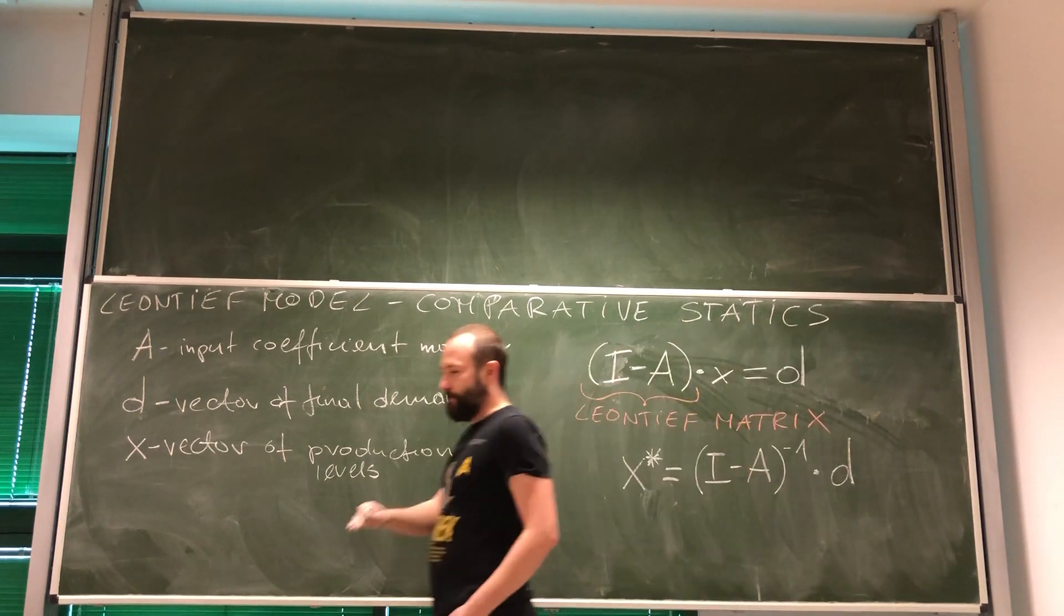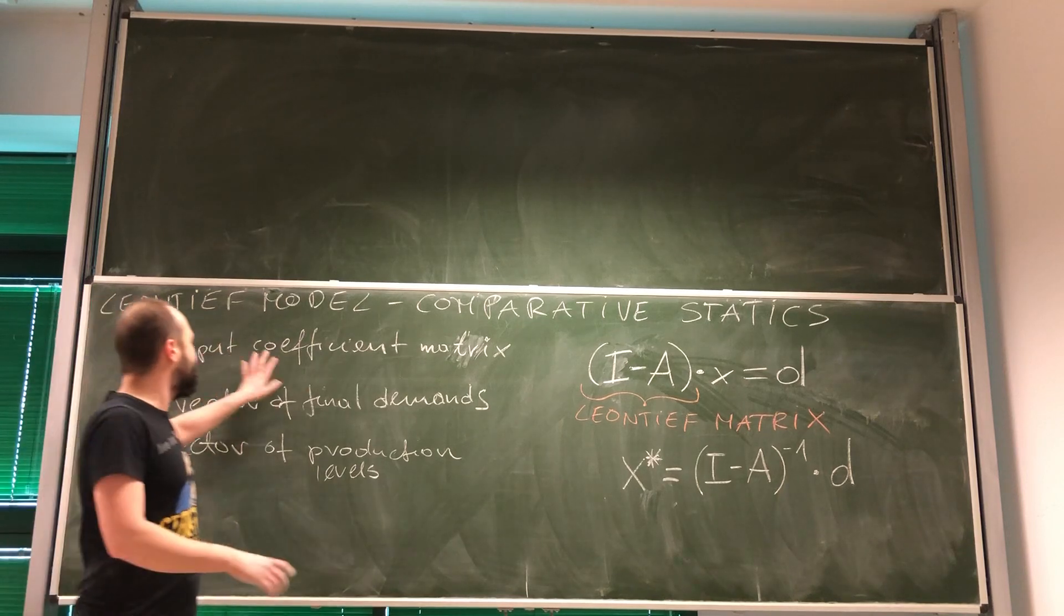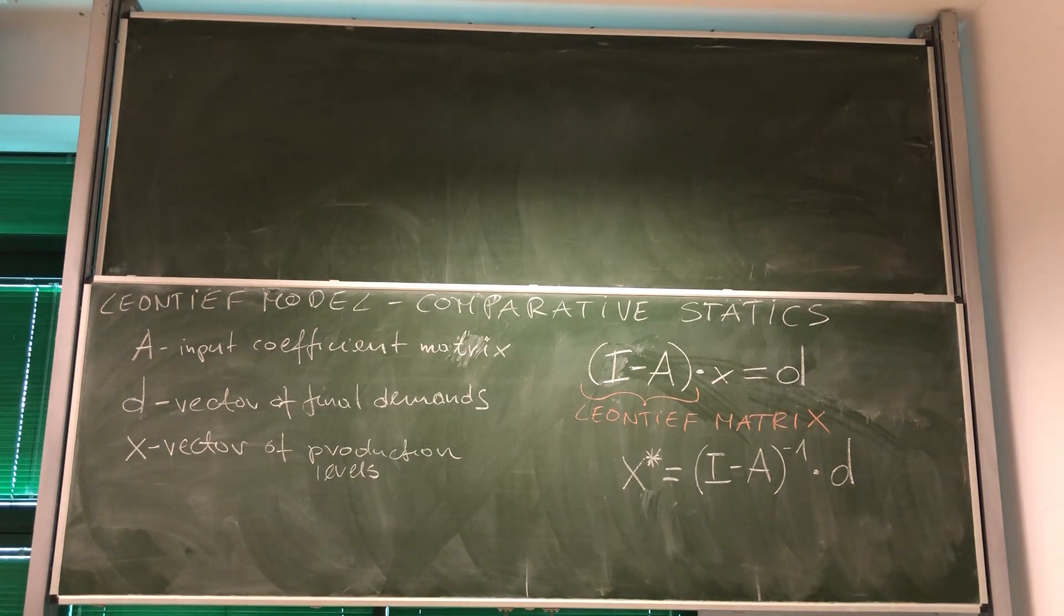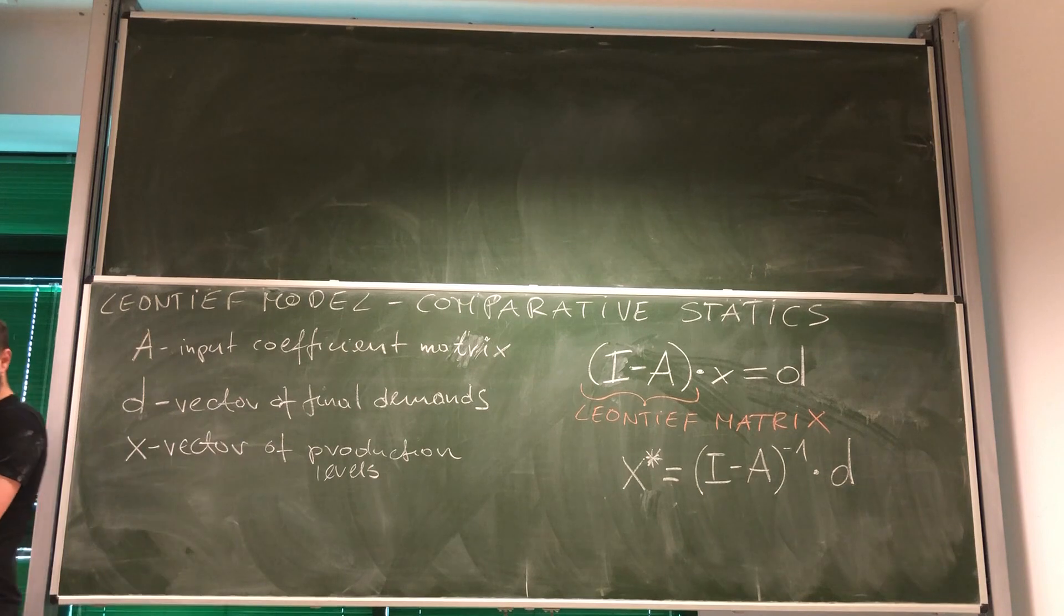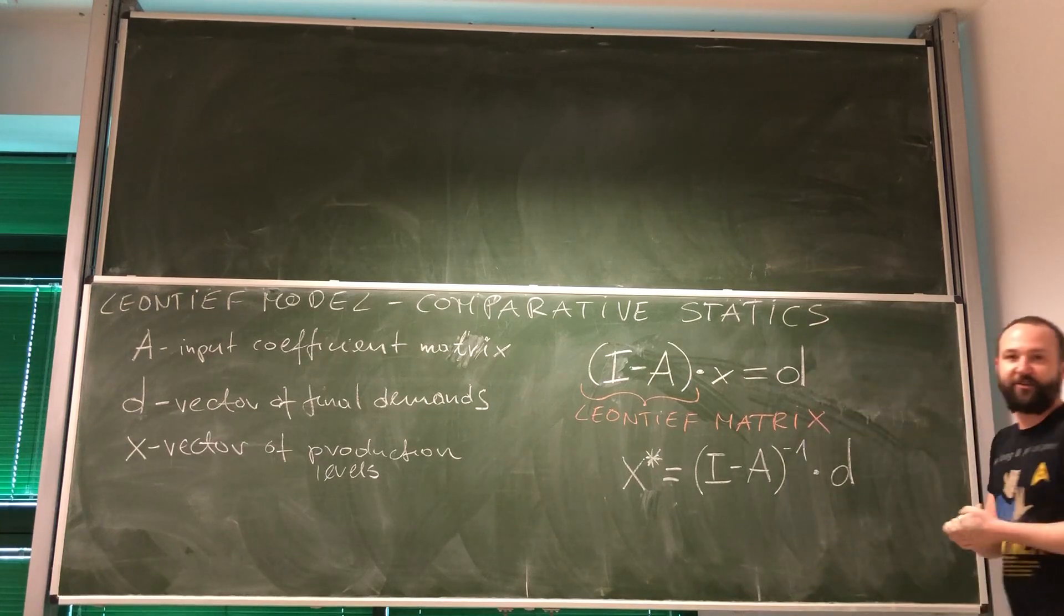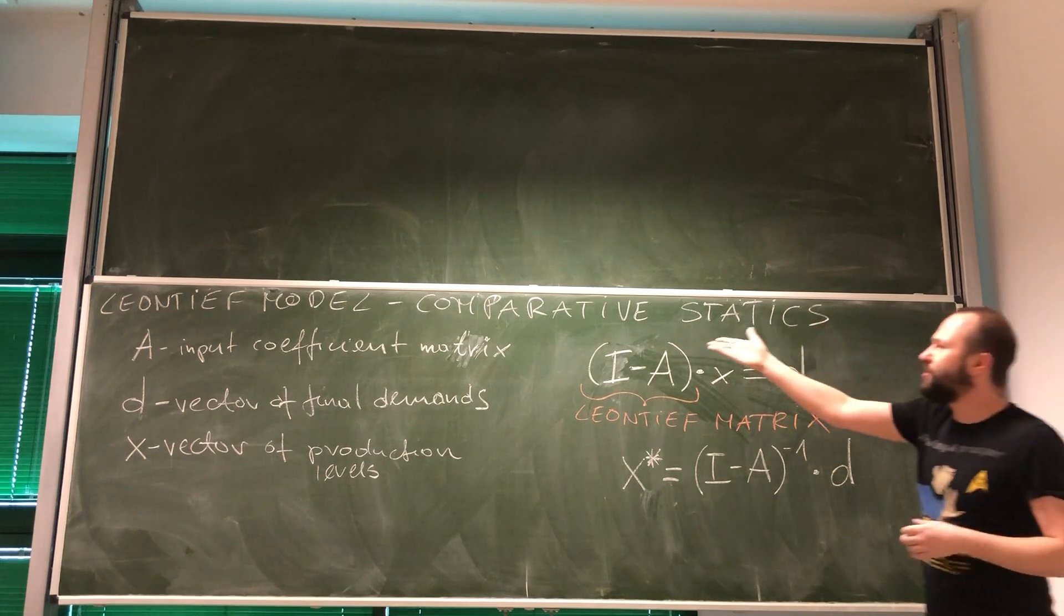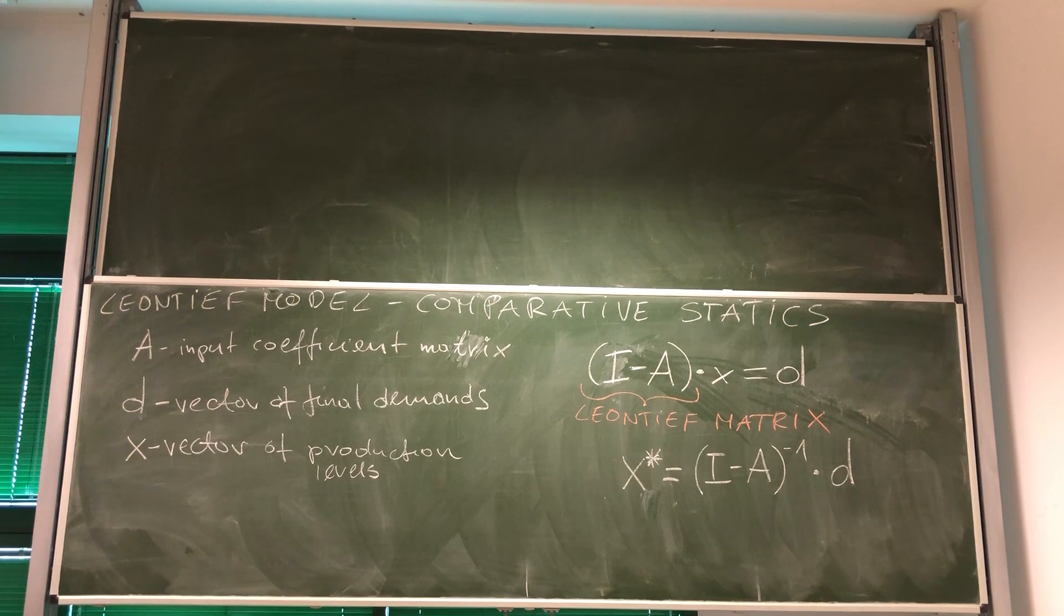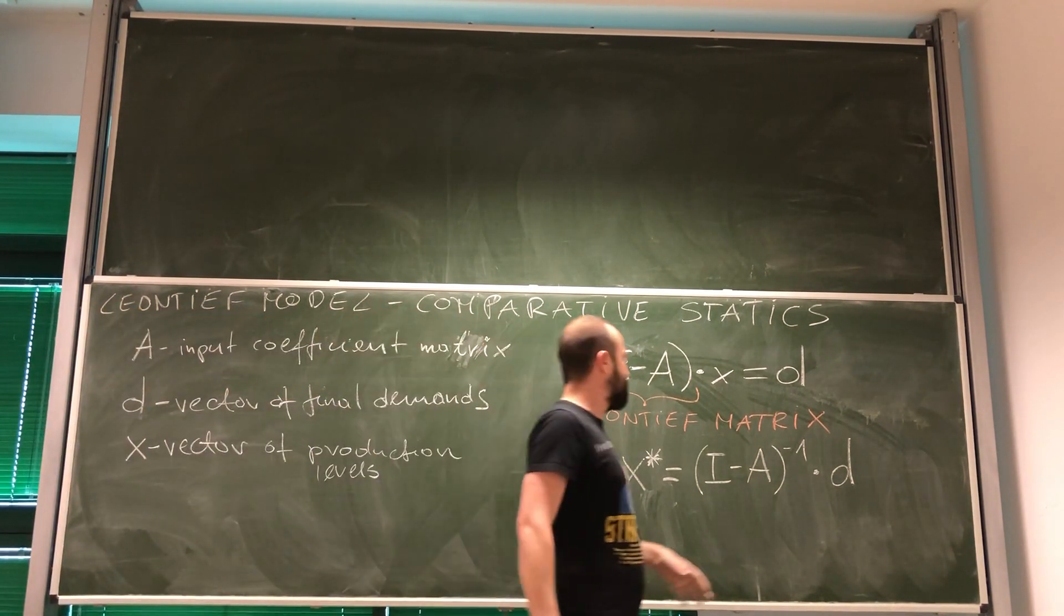But look, the coefficients given in input coefficient matrix are technical. Which means that in order to produce certain goods, you need to have certain amounts of very specific inputs. So they do not change that much. Of course, if you have some improvements in technology, they would change. But they are relatively stable over time.